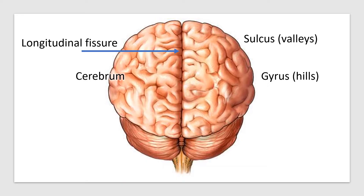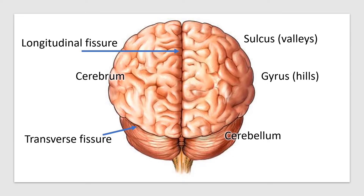Hanging off of the cerebrum you have these two globes — that's the cerebellum, which is separated from the cerebrum by the transverse fissure. The two halves of the cerebellum are connected by a strip of tissue called the vermis.